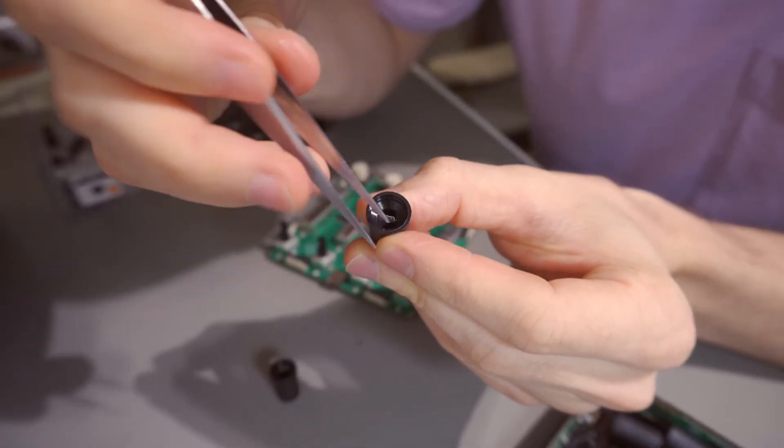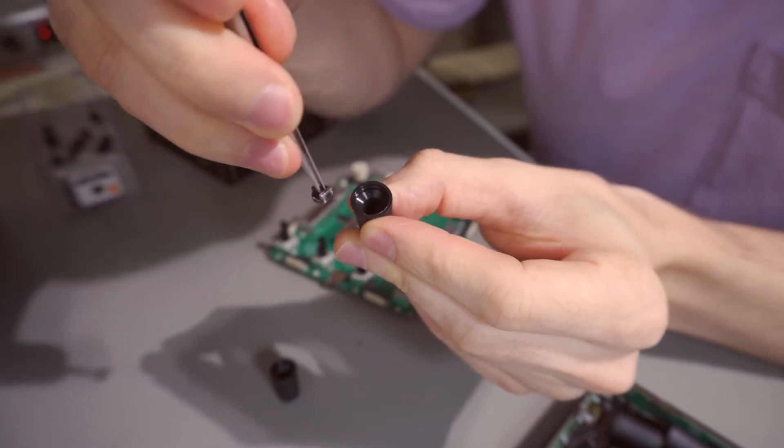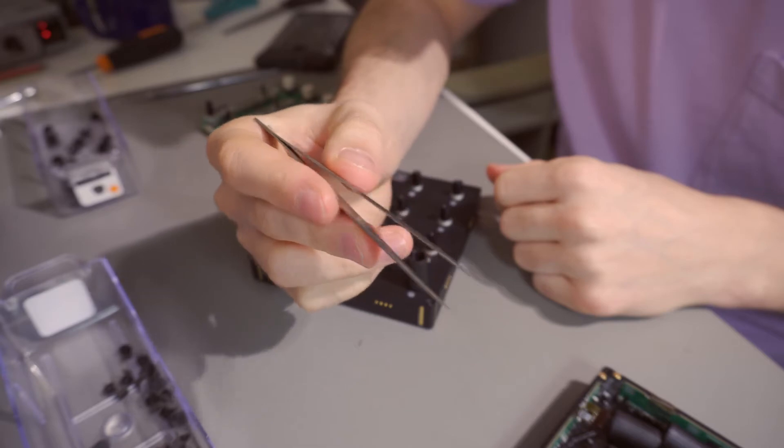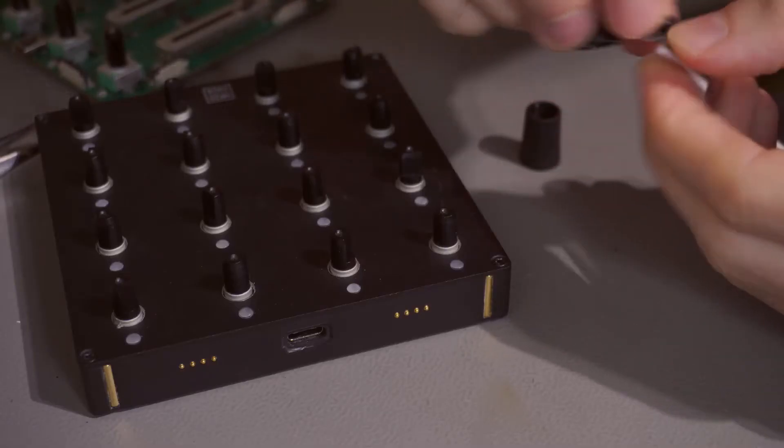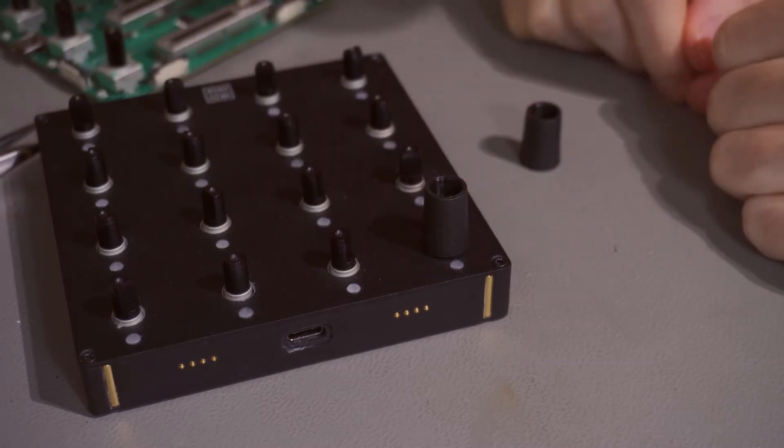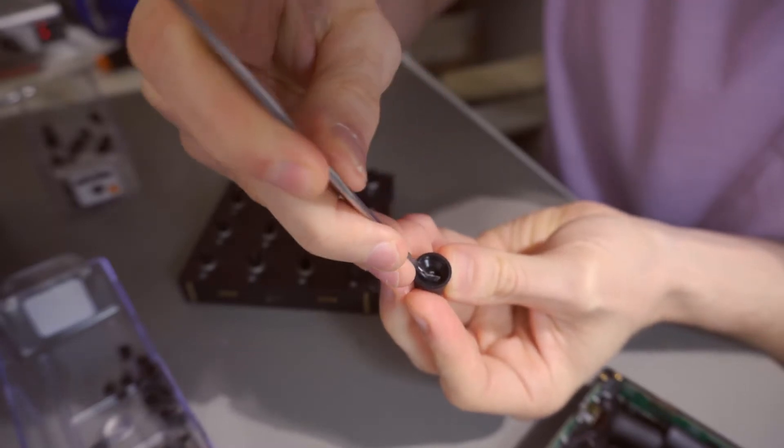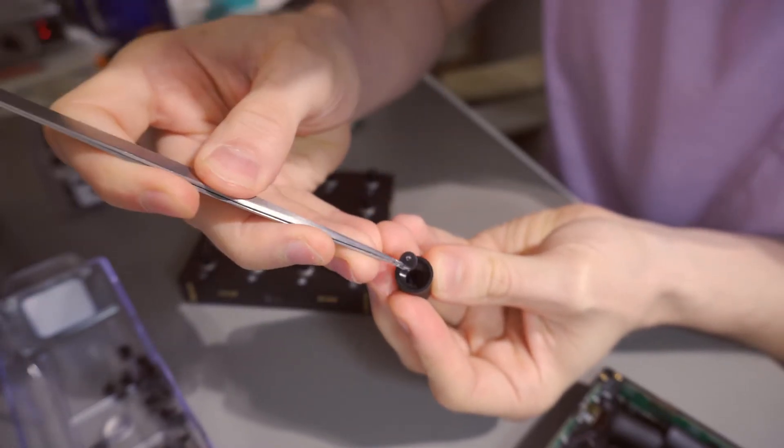First, to use an insert, make sure the knob doesn't have any leftover part inside. If there is any, use a tweezer to remove it. Second, once the knob is empty, place the insert on the control element, a potentiometer or an encoder, and push the knob onto it. If anything goes off, start again with the first step.